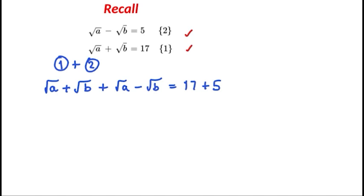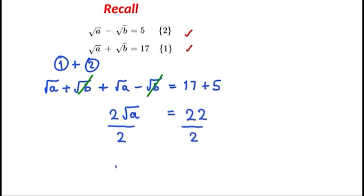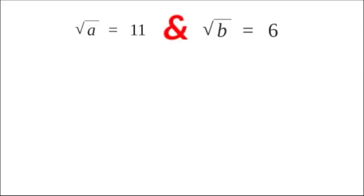We have 2 square root of a's, and there's a cancellation with the plus b and minus b. So the left-hand side becomes 2 times the square root of a, equal to 17 plus 5, which is 22. Dividing both sides by 2, we get the square root of a is equal to 11. Squaring both sides: the square root of a, all squared, equals 11 squared, so a is equal to 121.